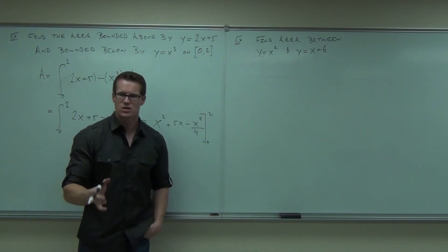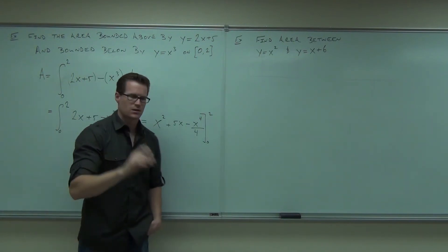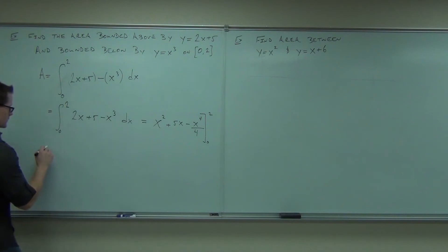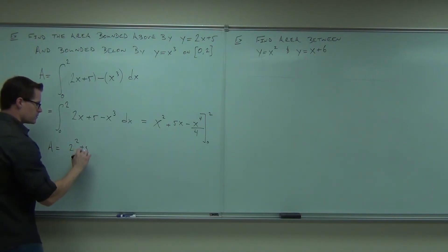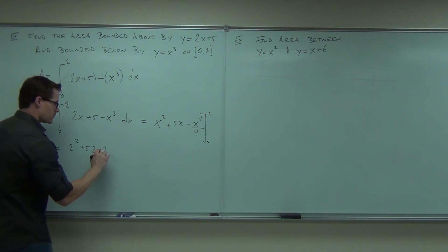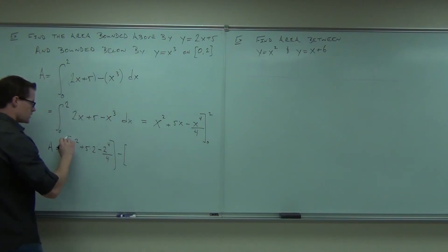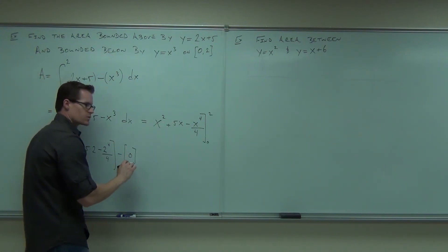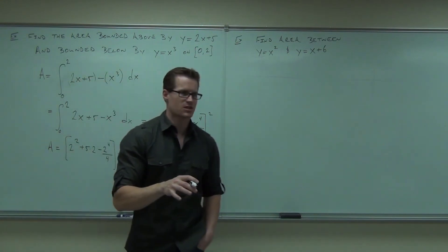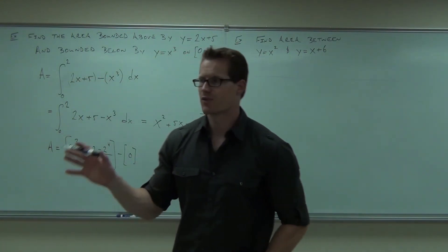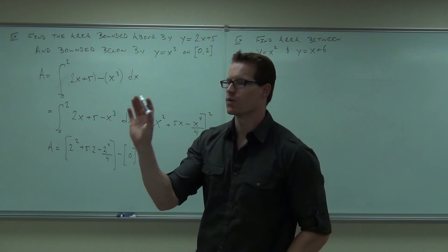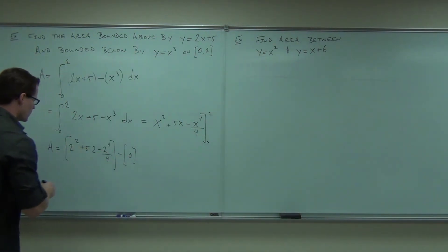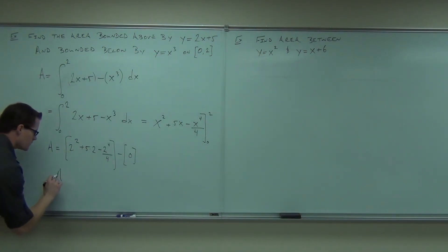Plus 5x minus x to the 4th over 4. And we're going to evaluate from 0 to 2. There's nice. There's no substitution that we needed. We can just go for a direct plug-in some numbers. So our area is, we'll plug in the 2. Subtract. When we plug in 0, we're going to get 0. I'm just going to show it so we don't forget it. Don't forget to plug in 0 because sometimes if you do have some constant in there, especially with the substitution, it won't be 0. But make sure you make a note of that.